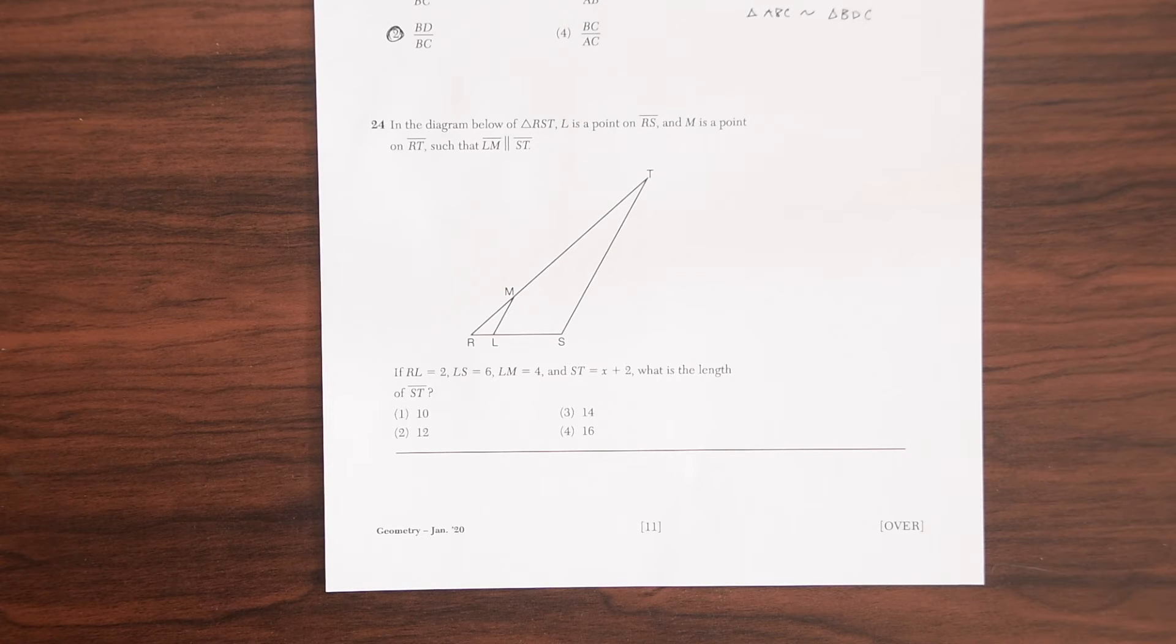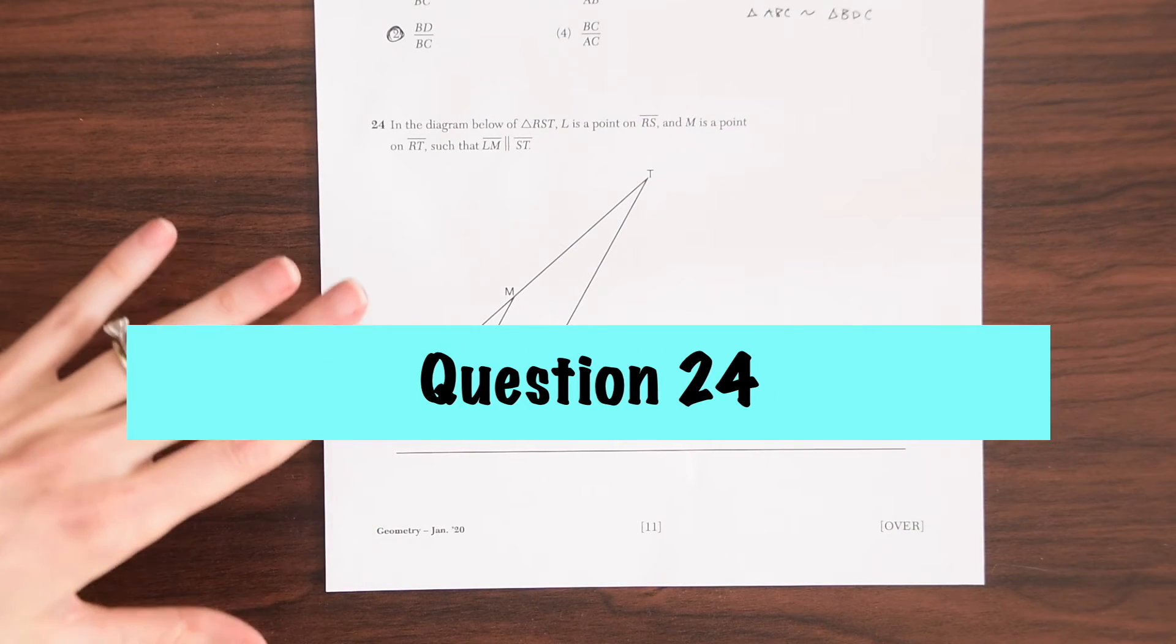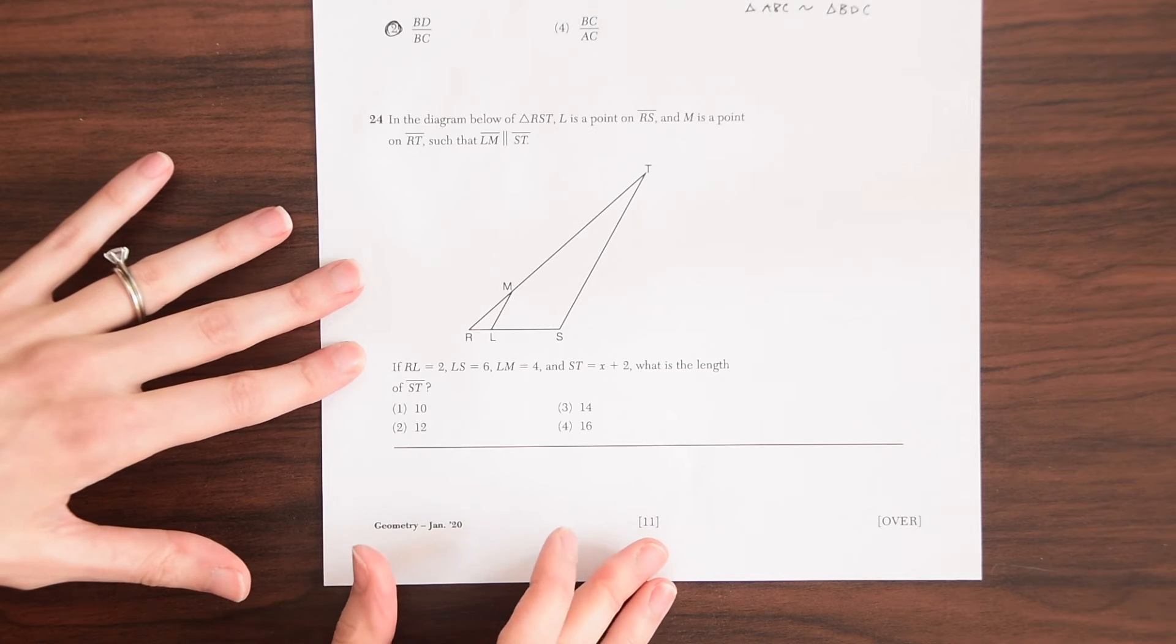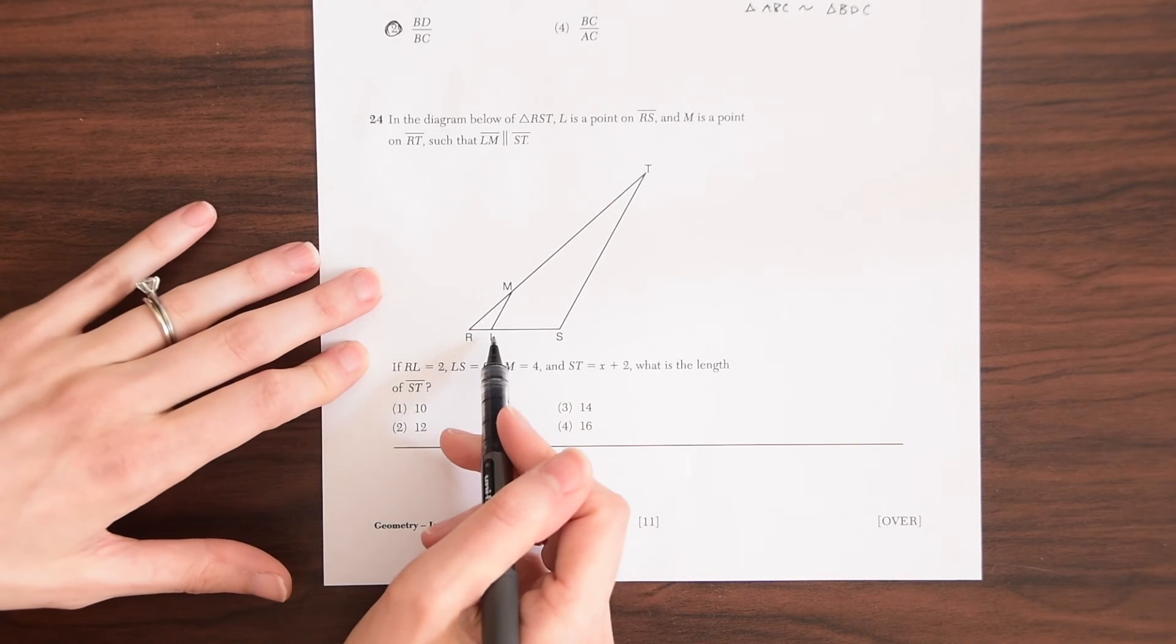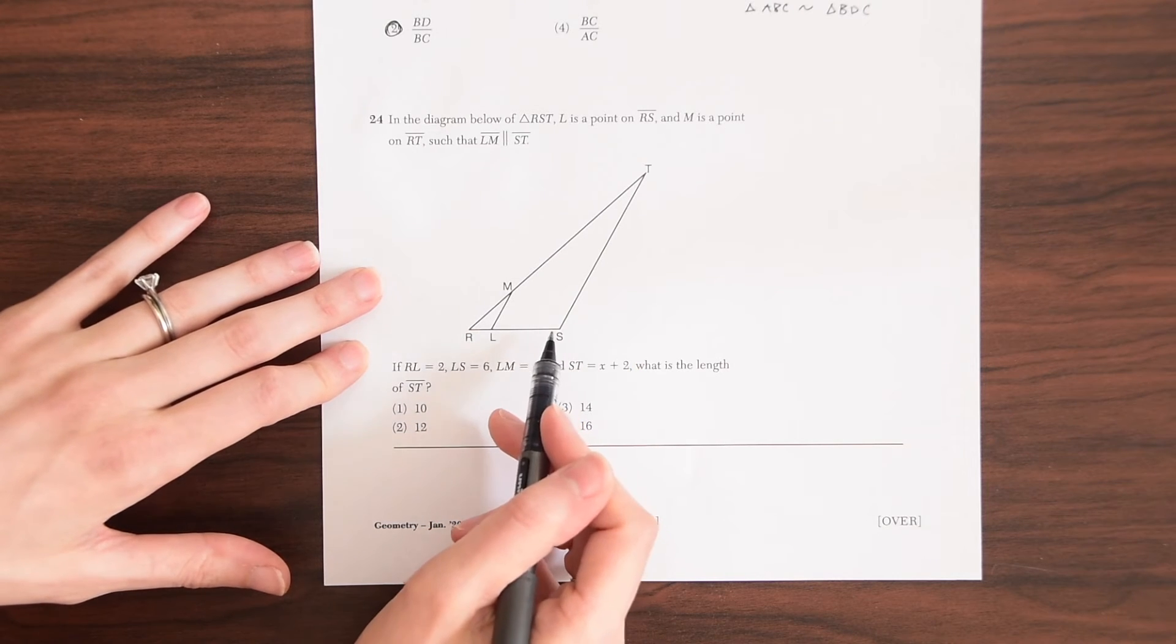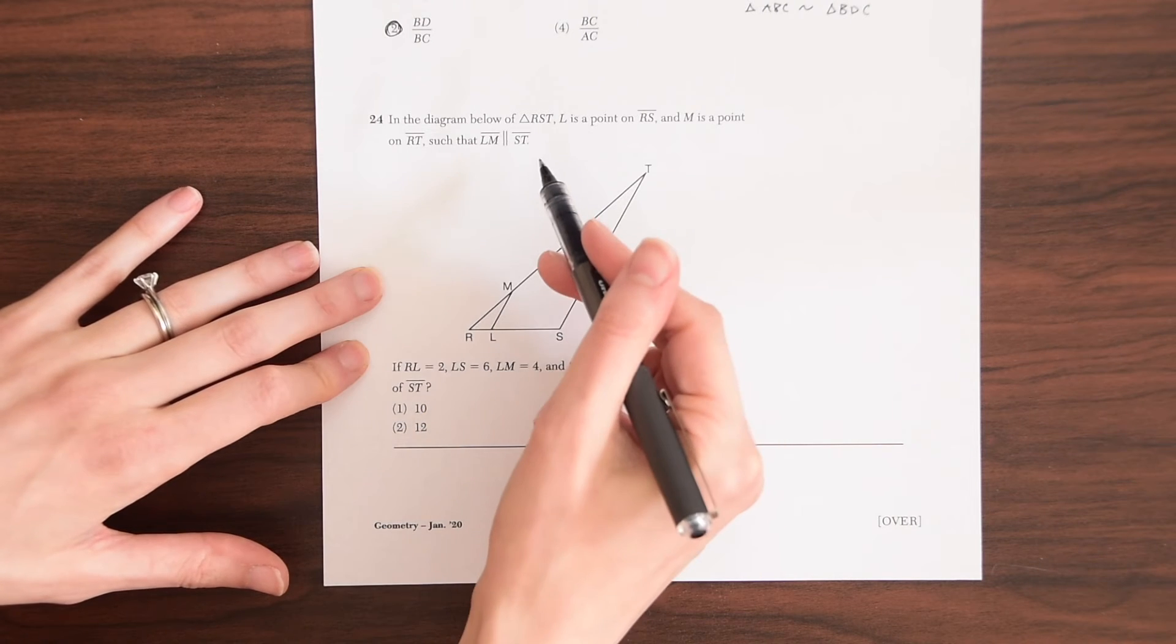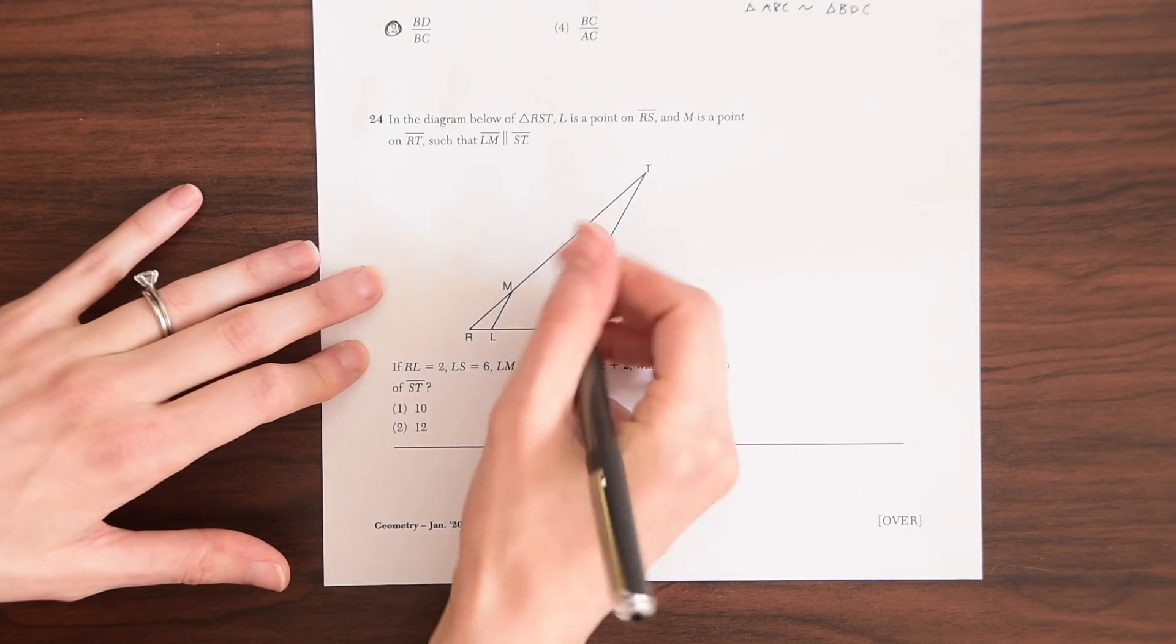And if you want to see more on similar triangles, I have a video on that. So please check that out. Now for question 24. In the diagram below of triangle RST, L is a point on RS and M is a point on RT such that LM is parallel to ST.